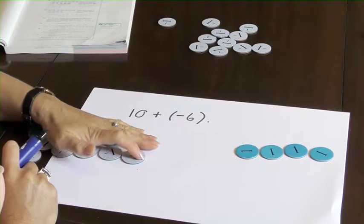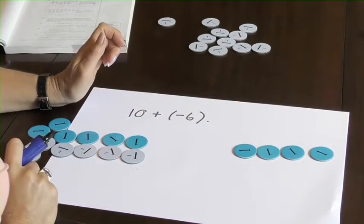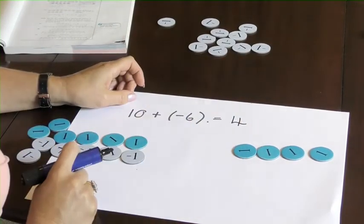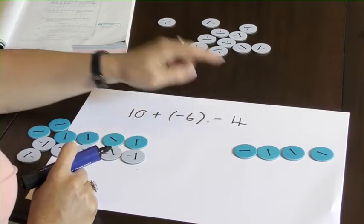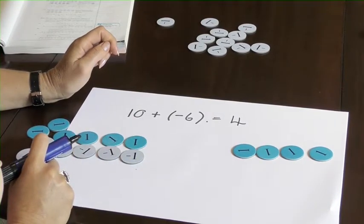Count how many are left. 1, 2, 3, 4. And they are positive. So that really supports my understanding of when I'm evaluating this, how big my answer is going to be and is it going to be positive or is it going to be negative.